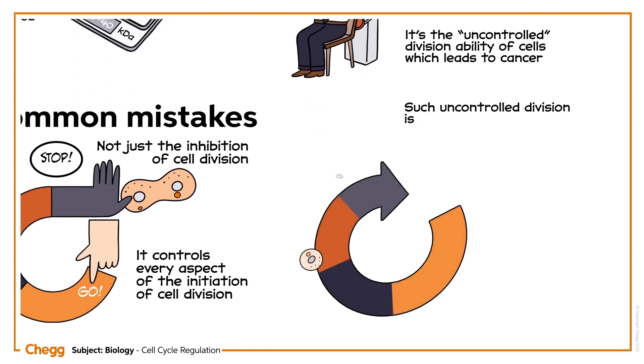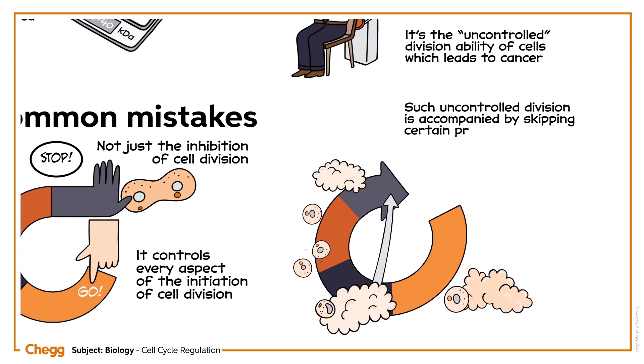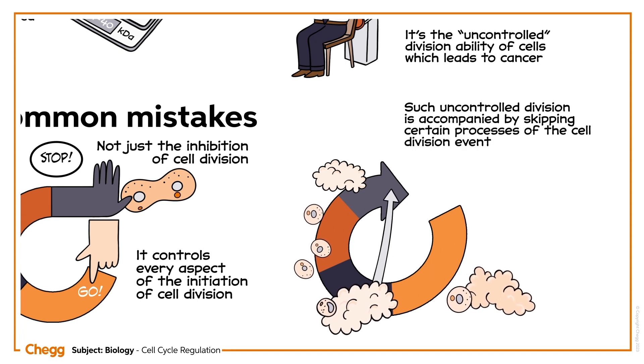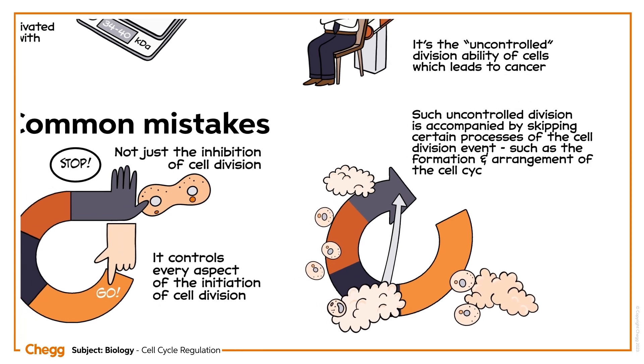Such uncontrolled division is also accompanied by skipping certain processes of the cell division event, such as the formation and arrangement of the cell cycle.